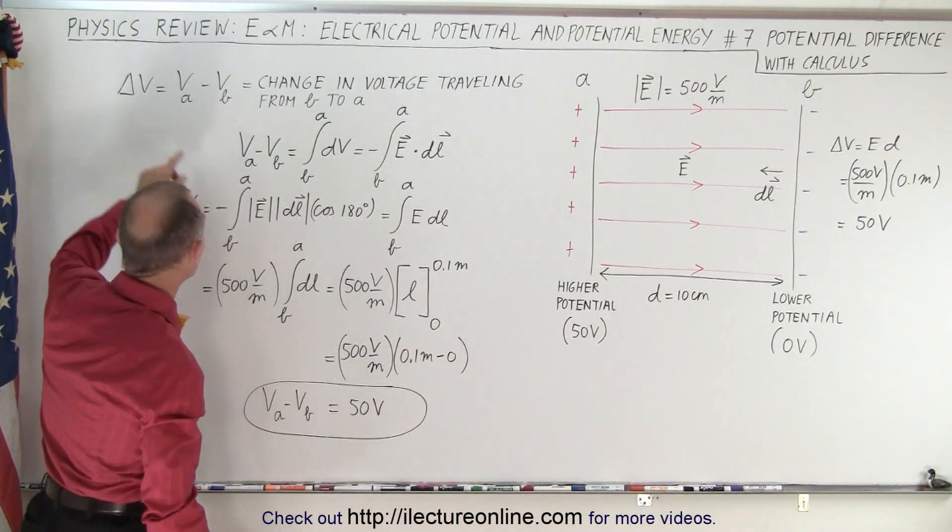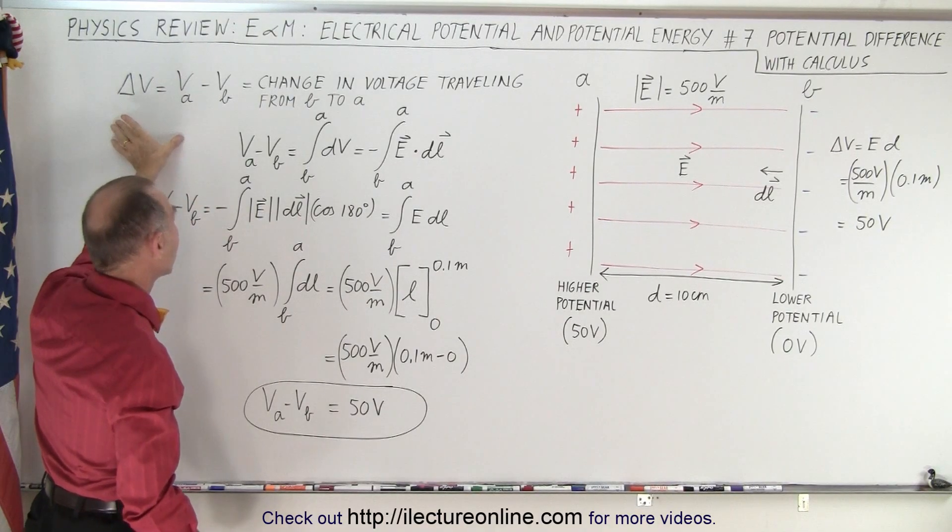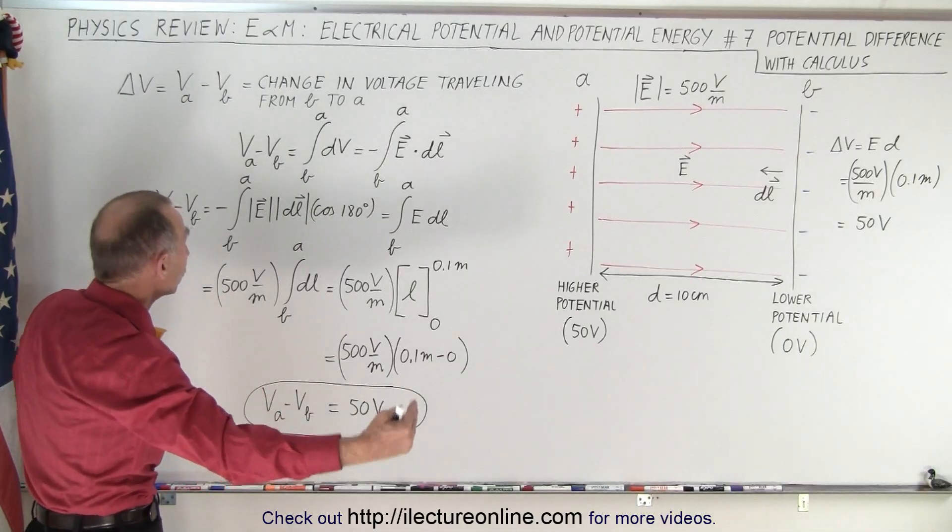Well remember that the change in voltage is equal to VA minus VB. If this is defined this way we can also define this VB minus VA. But it all depends which way we want to travel.